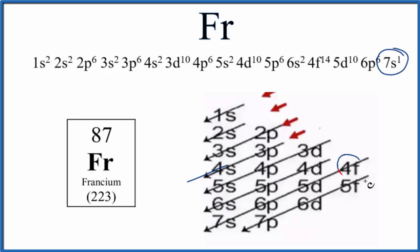And from 6S, we do go to the 4F. Fs can hold up to 14. So we have our 4F14, our 5D10, our 6P6. And we've used, at this point, 86 electrons. Remember, we only have 87. So that last S orbital, even though S holds 2, we only need one more. So we put 1 in it, we end with 7S1.